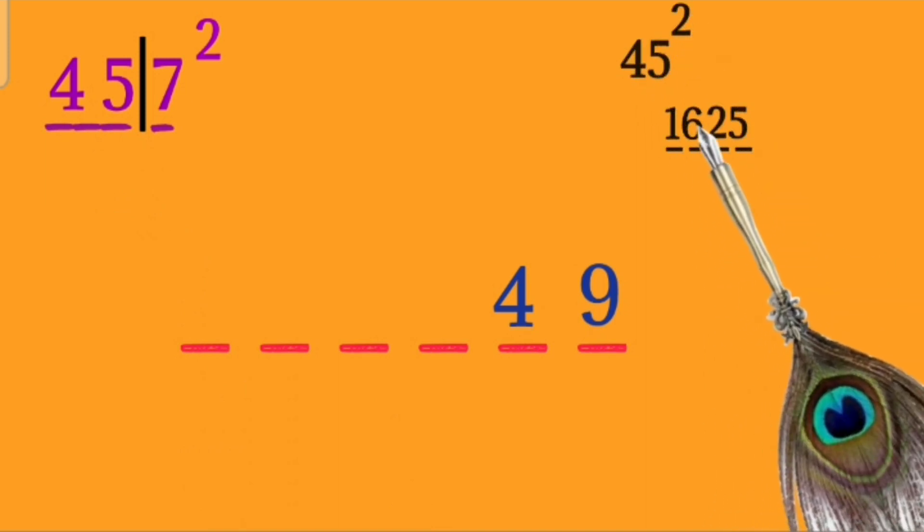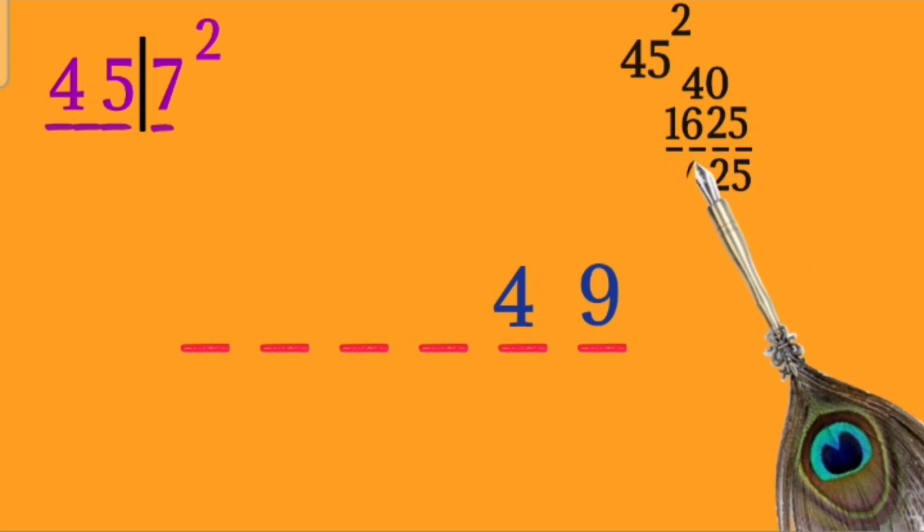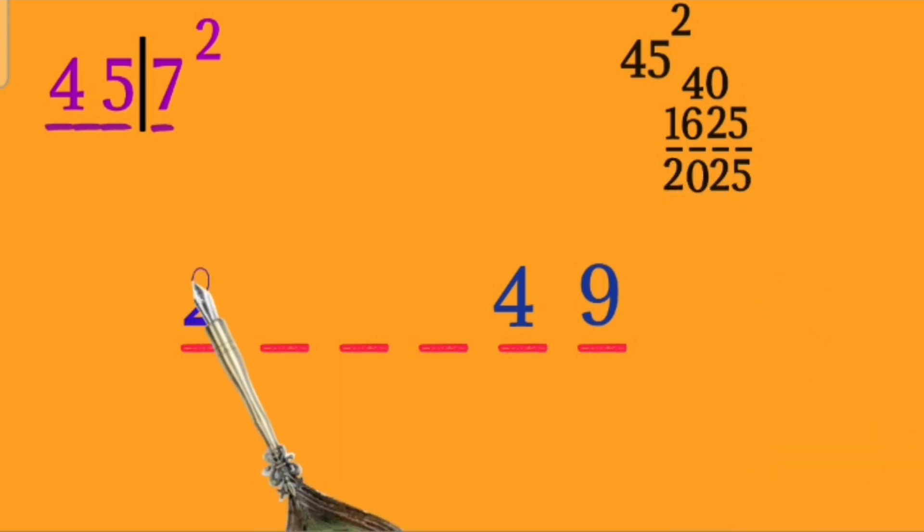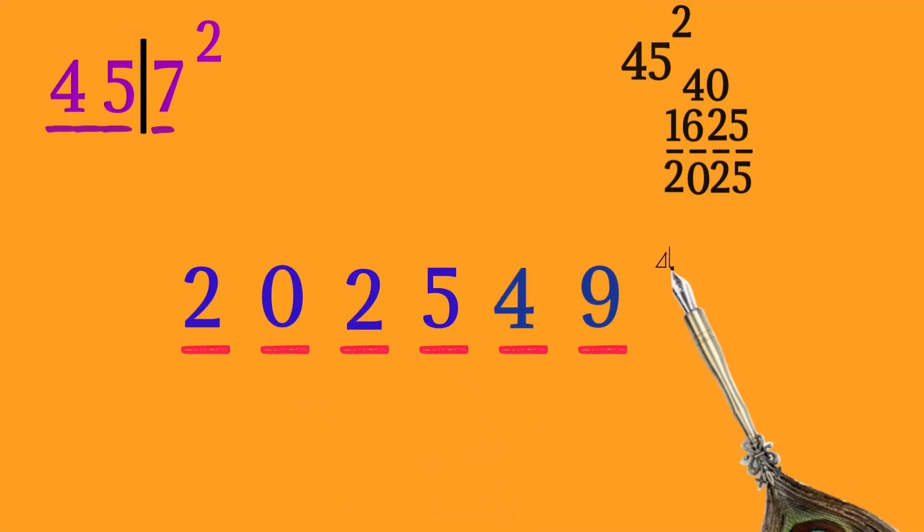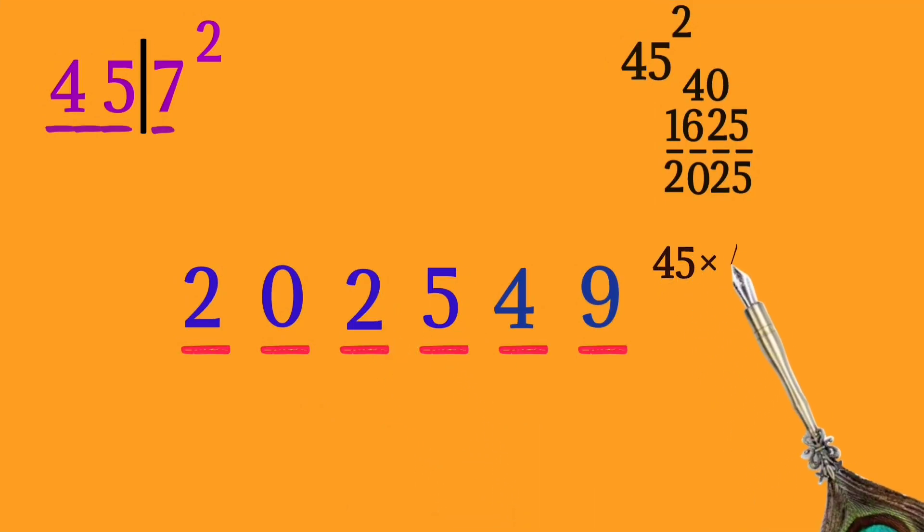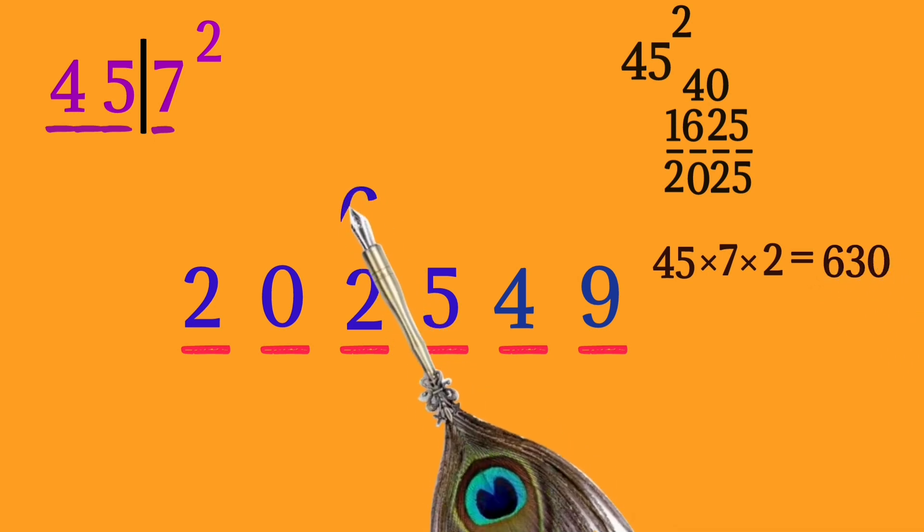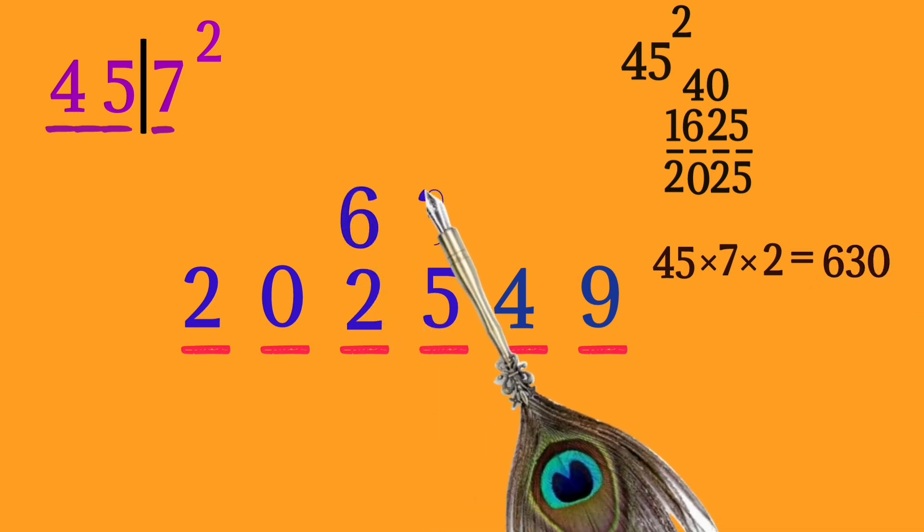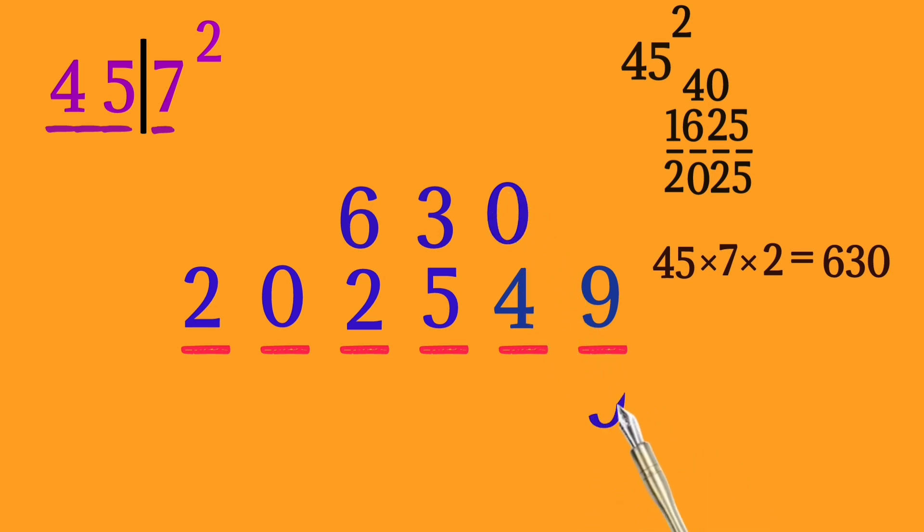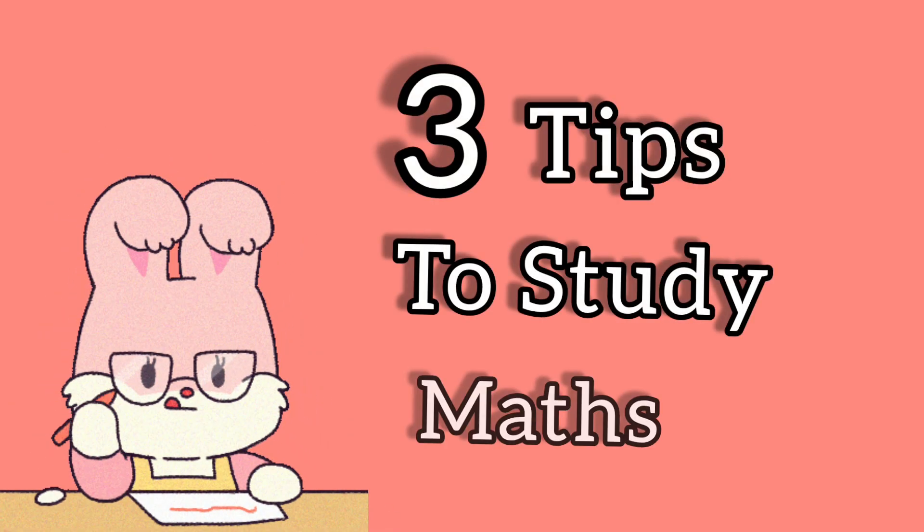Multiply the number 45 and 7 with 2. Thus, 45 × 7 × 2 = 630. Place the number 630 above the third, fourth, and fifth blanks. Finally, add the numbers and we get the answer 208849, which is the square value of 457. Thus, finding the square value becomes so easy. Tips to study math: